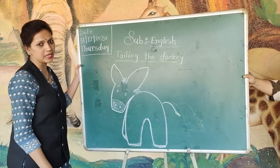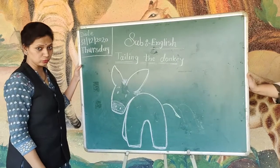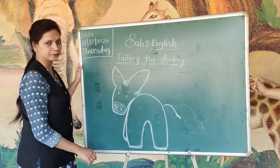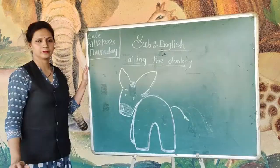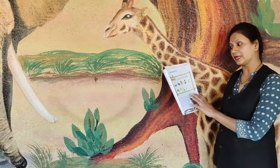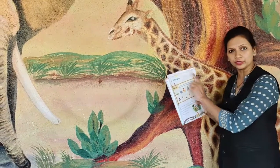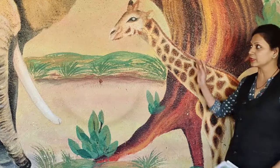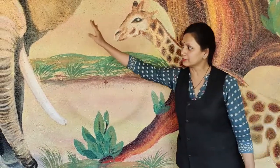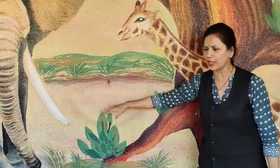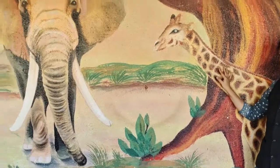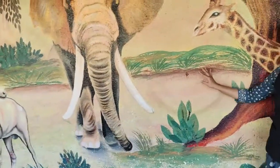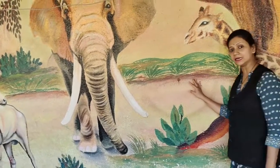The lesson name is 'At the Zoo.' Do you know what there is in the zoo? Our lesson is at the zoo, so we are going to see the animals. You can see this wall is full of animals — these animals are kept in the zoo and they are entertaining us.